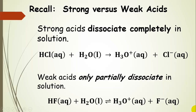Weak acids only partially dissociate, and so we indicate that with a double arrow — an equilibrium arrow. Hydrofluoric acid in water still forms hydronium and fluoride anion, but it only does so partially. It only dissociates partially.